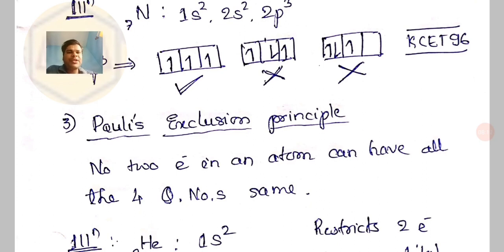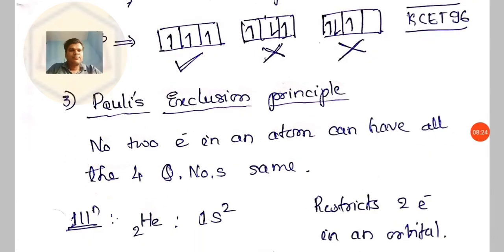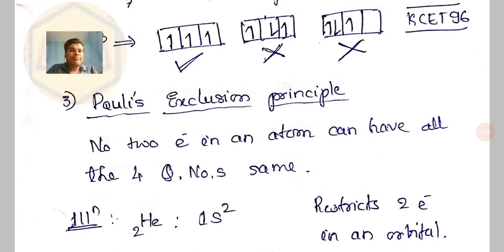The last rule governing electronic configuration is known as Pauli's exclusion principle. What it says is: no two electrons in an atom can have all four quantum numbers the same. So if you write an electronic configuration, in one atom it is impossible for two electrons to share all four quantum numbers.